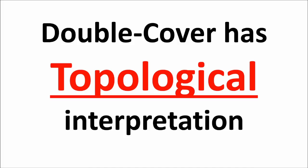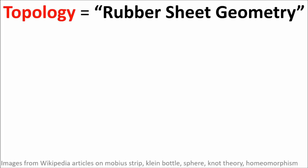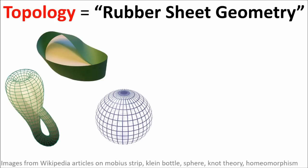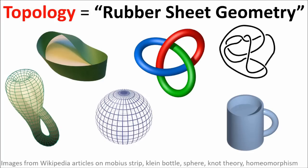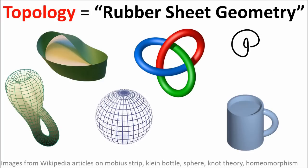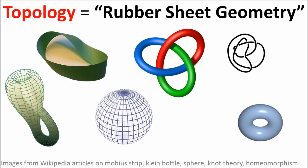However, there is also a topological interpretation for this concept of a double cover. Topology is an area of math that's sometimes called rubber sheet geometry, because it involves studying the overall shape and connectedness of various spaces without worrying about exact sizes and angles. When we study the topology of SO3 or SU2, we're studying the shape of what these spaces of rotations look like, and how the space is connected with itself.